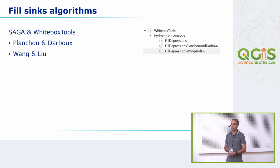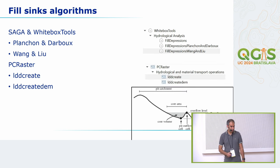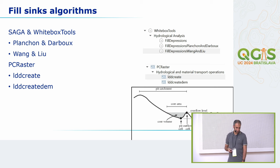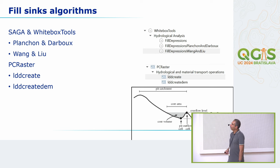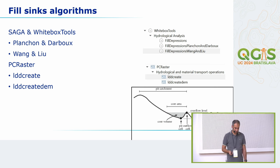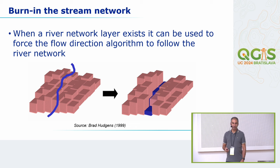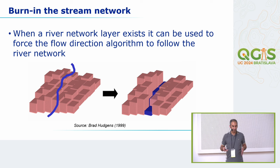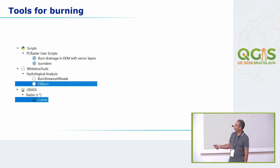There are many fill sink algorithms — in open source, you have good reference to the literature. SAGA and Whitebox use Planchon and Darbu, and Wang and Liu is very popular. PC Raster uses a different approach with more tuning parameters. PC Raster also does not result in a filled DEM but in the flow direction, because normally you're not even interested in the filled DEM. If you want the DEM, use the LDD Create DEM tool. GRASS uses Jensen and Domingue. Optionally, if you have a stream network, you can burn it into the DEM for more accuracy — Whitebox and PC Raster have tools for that, as does GRASS.